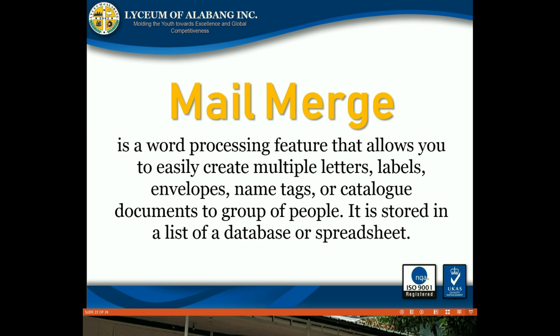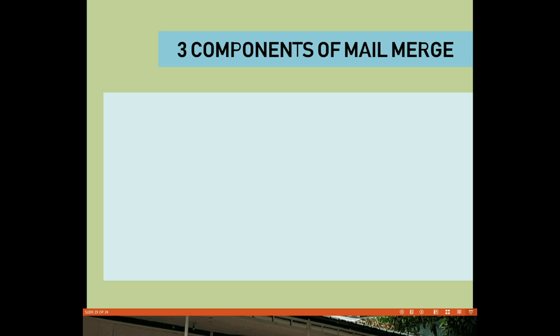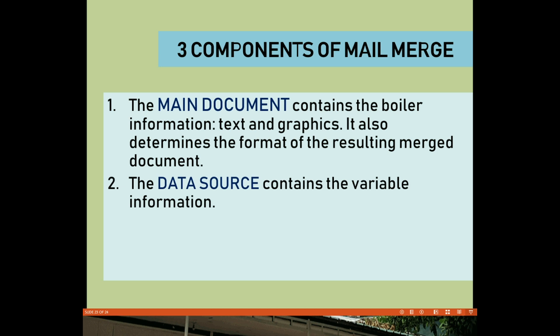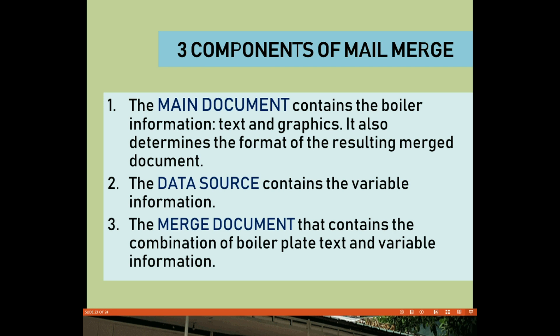Mail Merge is a word processing feature that allows you to easily create multiple letters, labels, envelopes, name tags, or catalog documents for a group of people. The information is stored in a list, database, or spreadsheet. Mail Merge has three components: the main document, which contains the boilerplate text and graphics; the data source, which contains the variable information; and the merge document, which combines the boilerplate text with the variable information.